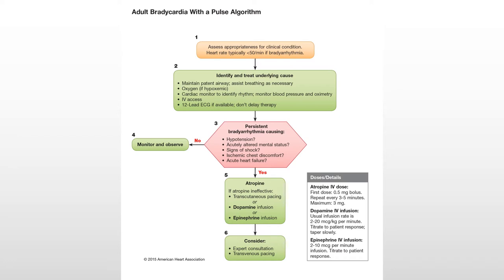Is this persistent bradyarrhythmia causing hypotension, change in mental status, signs of shock, ischemic chest discomfort, or acute heart failure? If the answer is no, then we watch and see what's going on. If they are having signs of hypotension or shock, that's when we choose to give them atropine — dosed at 0.5 milligrams, repeated every three to five minutes for a maximum dose of three milligrams. If atropine is not effective, we can do transcutaneous pacing with electrodes on the front and back of the chest using the defibrillator machine, or give dopamine or epinephrine.